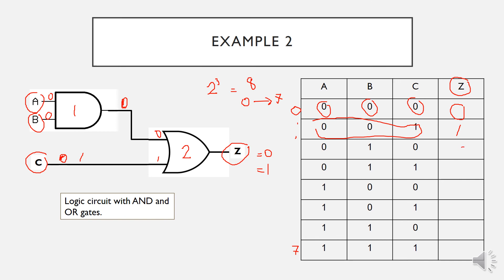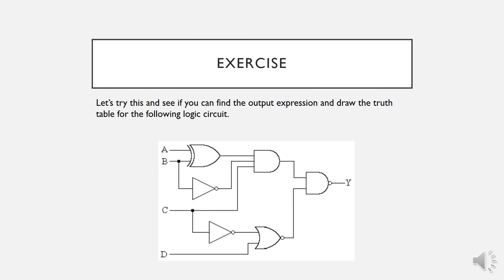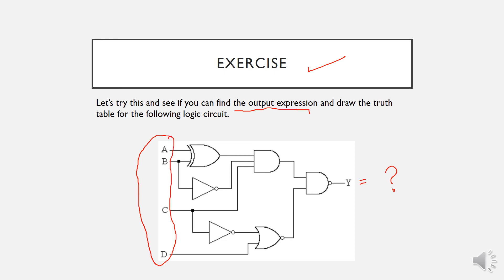Please try to complete the rest of the input combinations yourself — I leave you with that exercise. Also, please try to find the output expression for Y and draw the truth table based on an input combination of A, B, C, and D. That's it for now, thank you very much.